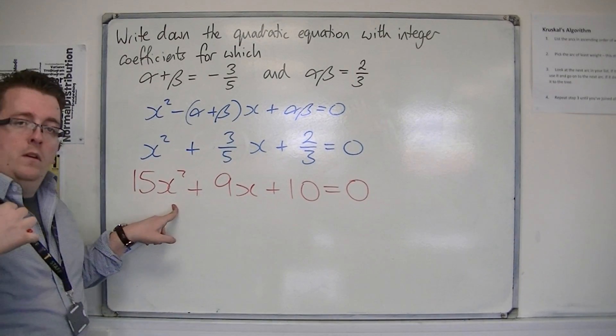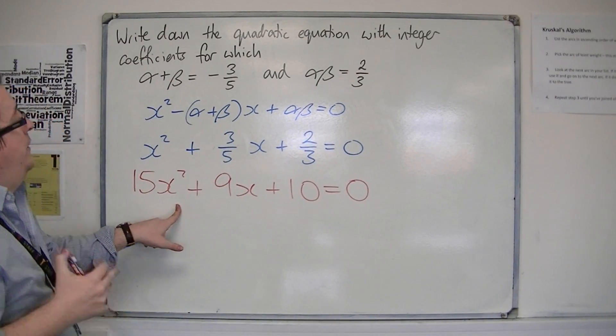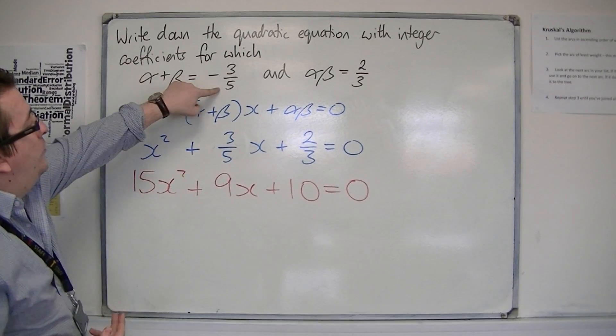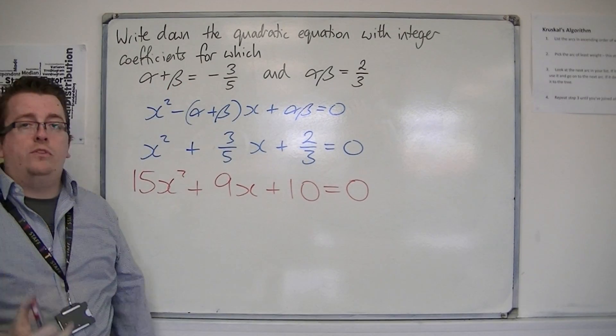And this is the equation with integer coefficients whose sum of the roots is -3/5 and product is 2/3.